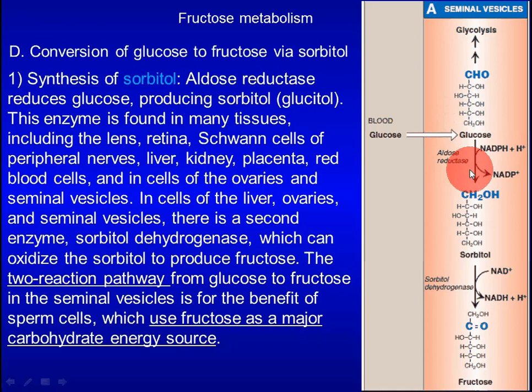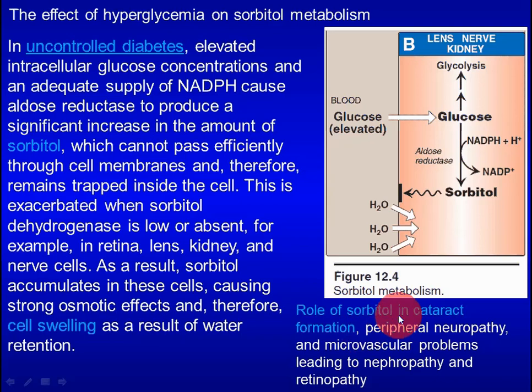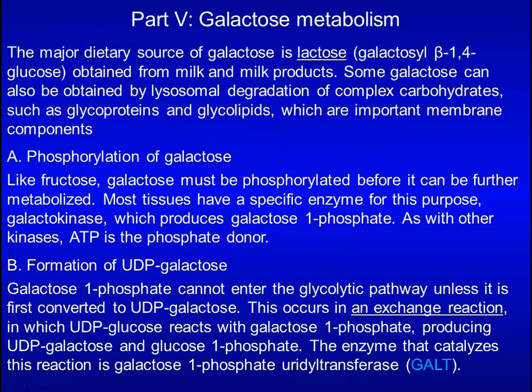Many tissues can convert glucose to sorbitol because they express aldose reductase, but only a few tissues — including liver, ovary, and testis — can further convert sorbitol to fructose. In uncontrolled diabetes, a rise in intracellular glucose causes a rise in intracellular sorbitol. In tissues such as lens, nerve, and kidney where sorbitol dehydrogenase is absent or very low, sorbitol accumulates. This has a strong osmotic effect causing cell swelling and is the mechanism for cataract formation in uncontrolled diabetes patients.